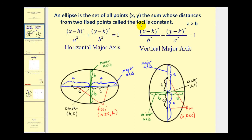If we have the equation of an ellipse in standard form, the center will be (h, k). Since a is greater than b, the fraction with the larger denominator tells you whether the major axis will be horizontal or vertical. If the larger denominator is under the x part, we have a horizontal major axis; if under the y part, a vertical axis. The value of a gives the distance from the center to the endpoints of the major axis, b gives the distance to the endpoints of the minor axis, and c gives the distance from the center to the two foci.